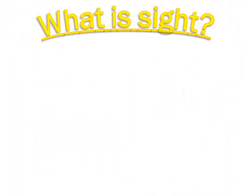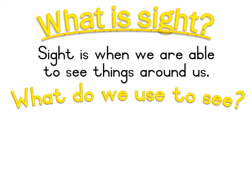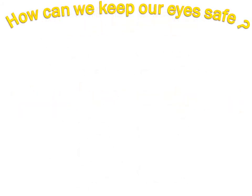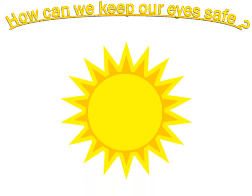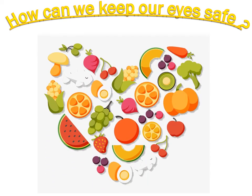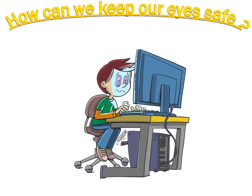Now let's do — what is sight? Sight is when you are able to see things around you. What do we use to see? We use our eyes to see everything around us. How can we keep our eyes safe? Firstly, do not look into the sun — the sun can badly hurt your eyes. If you feel like you can't see properly or your sight is blurry, you have to tell mommy and dad so you can wear glasses. Then eat all your healthy foods so that you can get vitamins to help your eyes. And lastly, do not stare at computer or TV screens as they hurt your eyes.